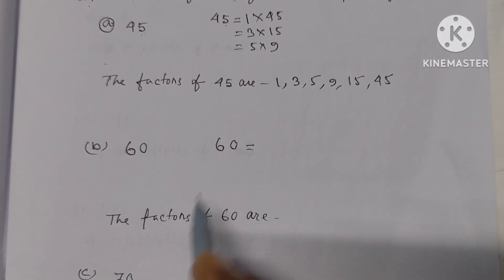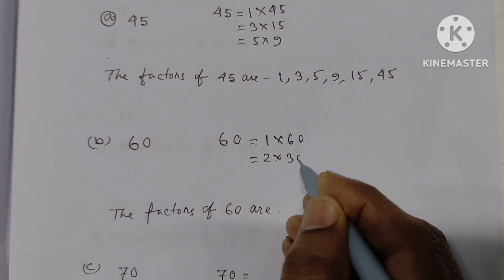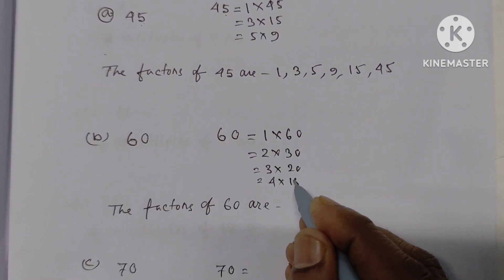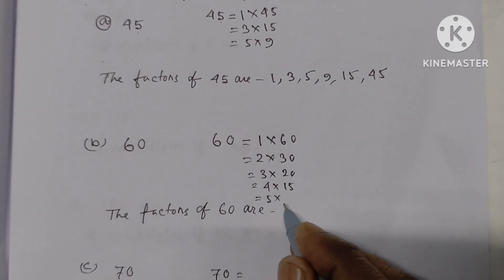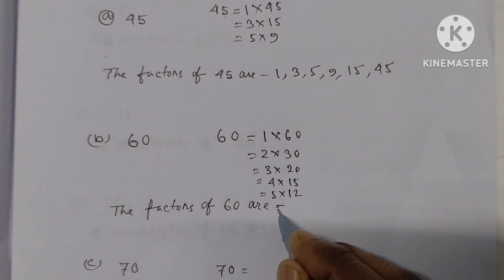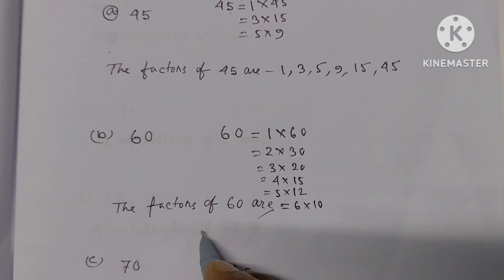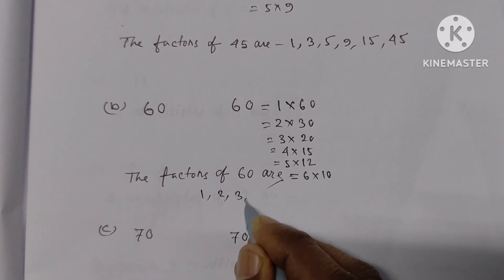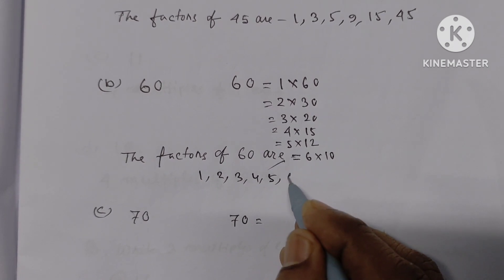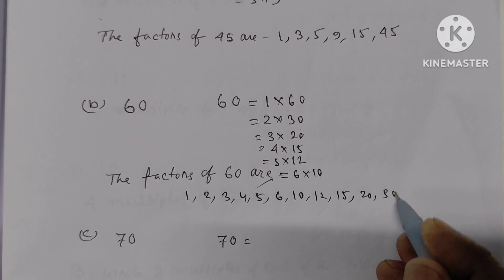Next one is 60. For 60, you can write: 1 x 60, 2 x 30, 3 x 20, 4 x 15, 5 x 12. The factors of 60 are: 1, 2, 3, 4, 5, 6, 10, 12, 15, 20, 30, 60.